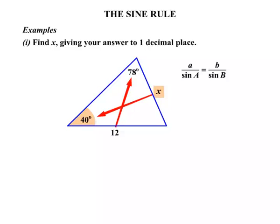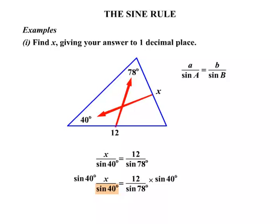So x as we said matches with 40 degrees. So we write x over sin 40. And the 12 matches with 78 degrees. So we write it equals 12 over sin 78 degrees. We'll just rewrite that because we're going to do some cancelling down. We're trying to find x at the moment. It's being divided by sin 40 degrees. So let's multiply both sides by the sin 40. On the left hand side they will cancel. So we do get x by itself. And on the calculator 12 divided by sin 78 times sin 40. Making sure your calculator is in degrees mode. Should work out to be 7.9 to 1 decimal place.